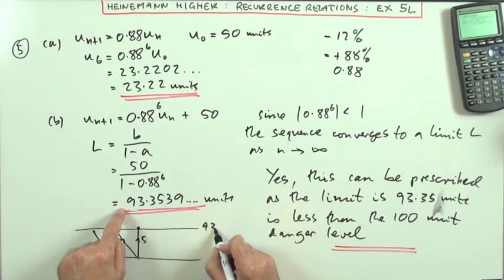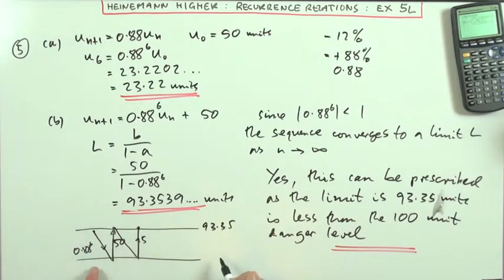There's the upper level, which is this 93.35, but there'll be a lower level, which is 50 below that, which will be 43.35, and you have to consider both of these when you've got a question.